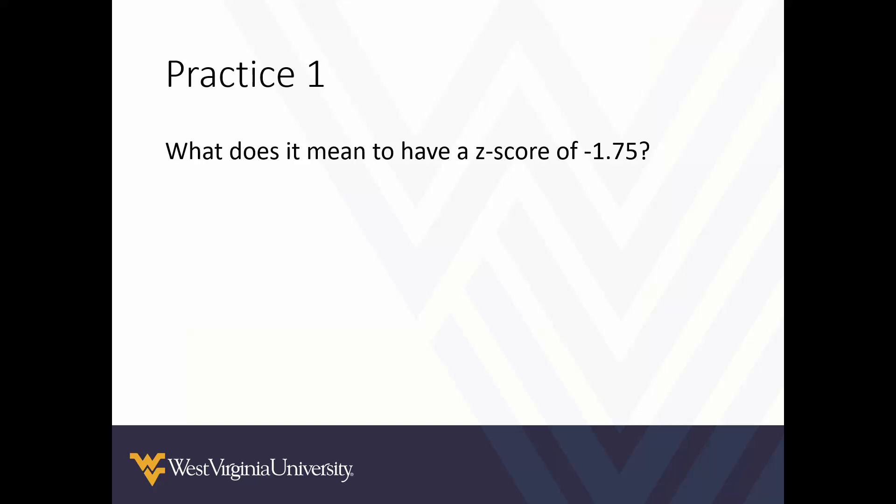First practice question: what does it mean to have a z-score of negative 1.75? That means we have a value that is 1.75 standard deviations below the mean.